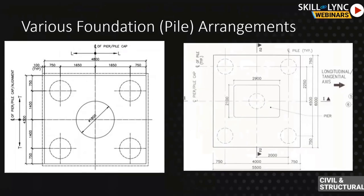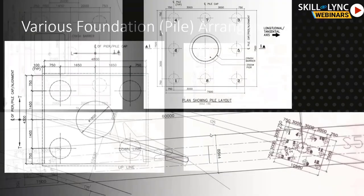Now we are going to look into foundation requirements. We've seen the basic parts of the viaduct and station. Now we'll look at pile arrangements, which are generally followed in practice. The number of piles depends upon the vertical load coming in and the geotechnical properties of the soil. Based on that, we decide whether it's a four-pile group, five-pile group, six, seven, or eight-pile group.